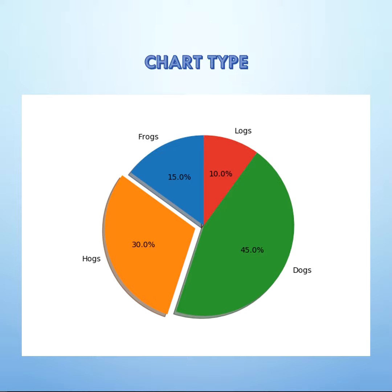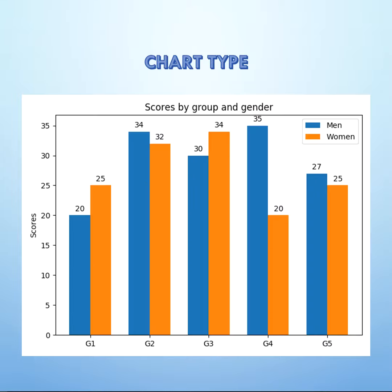However, I don't prefer the pie chart, as the area of the pie portions sometimes becomes misleading. When we compare between a large number of variables, the bar chart is a better choice than the pie chart.